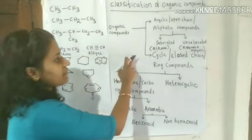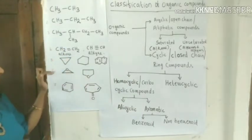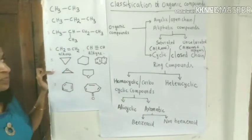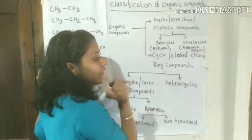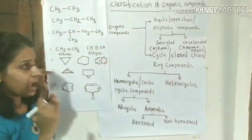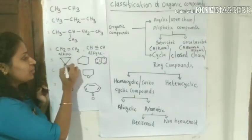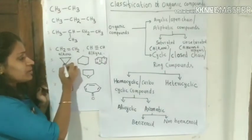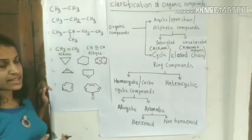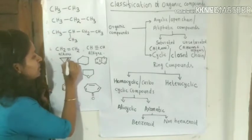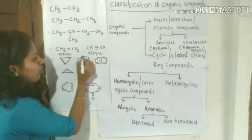The second classification is cyclic, or closed chain, or ring compounds. Carbon atoms are connected through covalent bonds to form rings or cycles. These ring-forming organic compounds make up the cyclic classification.